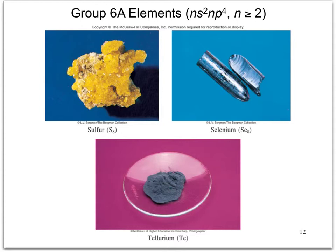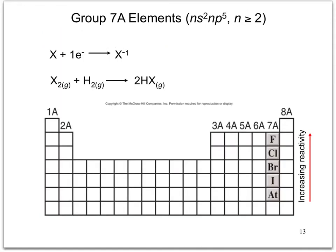Tellurium is the only metalloid in group 6. The group 7A elements react with hydrogen directly to form acids. Chlorine, bromine, and iodine form strong or mineral acids, whereas hydrofluoric acid, HF, is a weak acid.